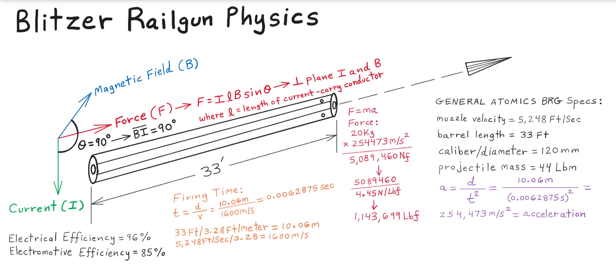We can now calculate the force using Newton's second law of motion: F = ma. So 20 kilograms times 254,473 meters per second squared yields 5,089,460 newtons of force. Its pounds-force conversion is 1,143,699 pounds of force accelerating the projectile. The 44 pounds weight converts to 20 kilograms mass.